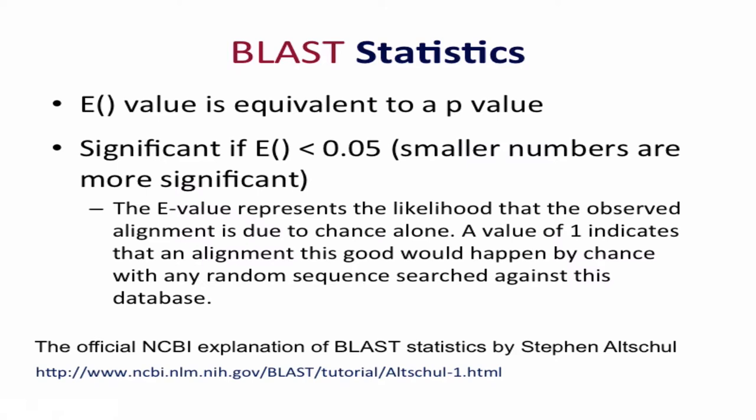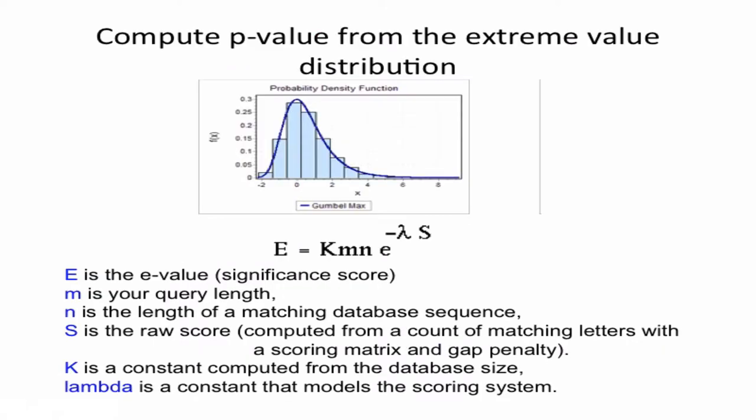Student question: what would be the case when you have worse than one? For example, if you did a query with a 15-base DNA primer, since the formula has a factor for query length, it can't get a score better than one even if the match was perfect. That's when you'd get E-values greater than one.